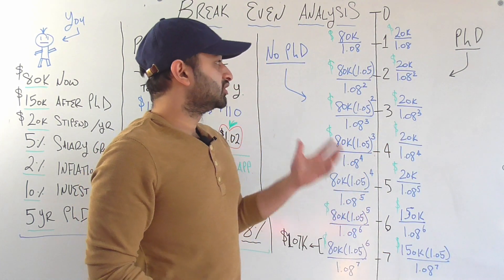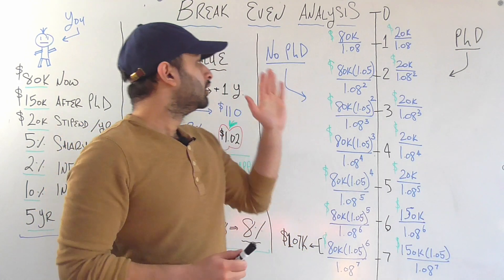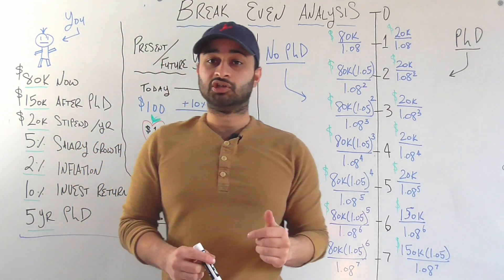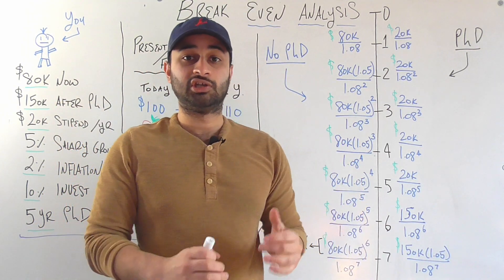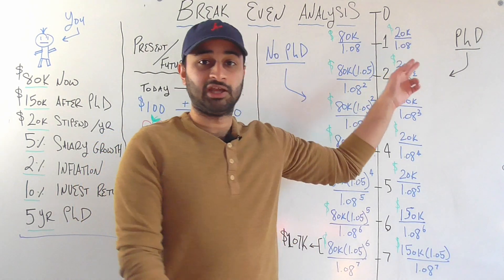So now let's go ahead and just look at these two different decisions. The decision we're trying to make, again, either you're going to not get your PhD. So you're going to continue working your $80,000 job, continue getting raises, and that'll be the way you go.